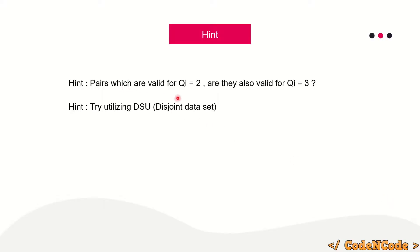The answer is yes — all pairs which are valid for qi = 2 will be valid for qi = 3 or any qi greater than 2. Pairs valid for qi = 2 are those where the simple path does not contain any edge with weight greater than 2, so they are clearly also valid for qi = 3.